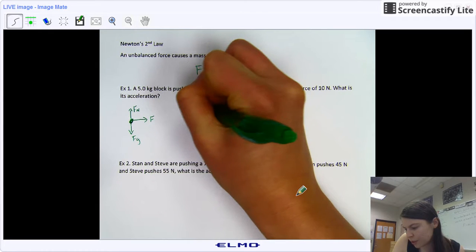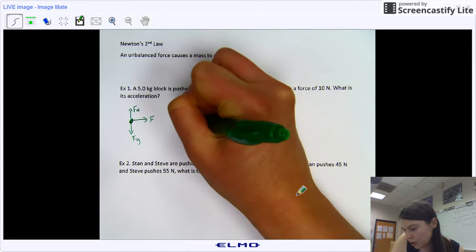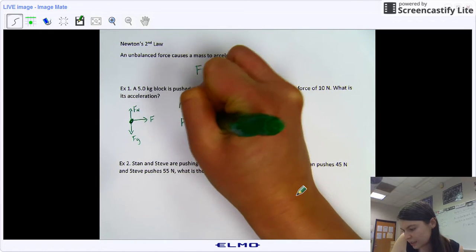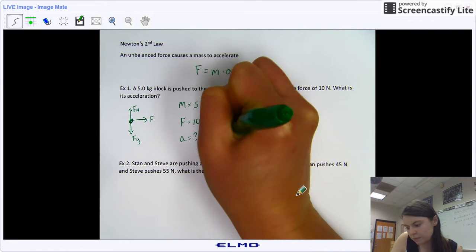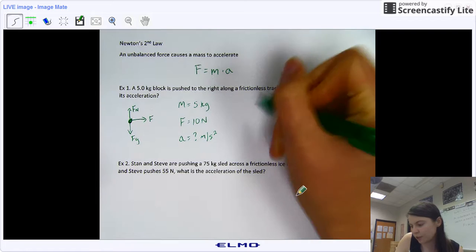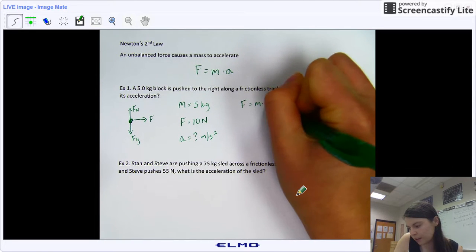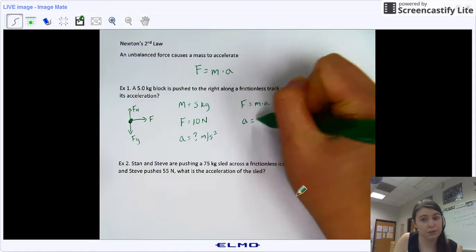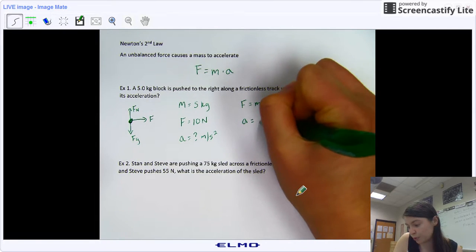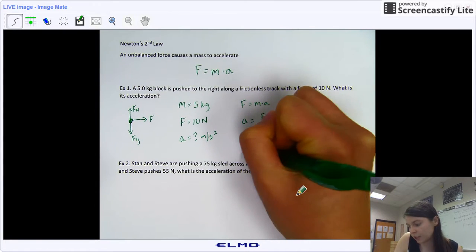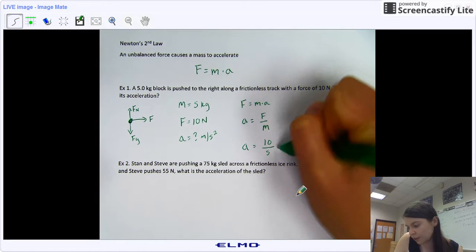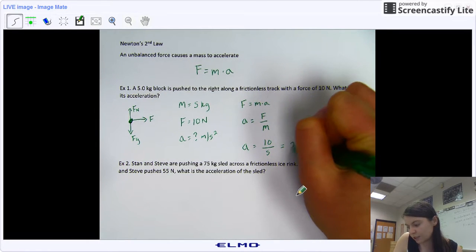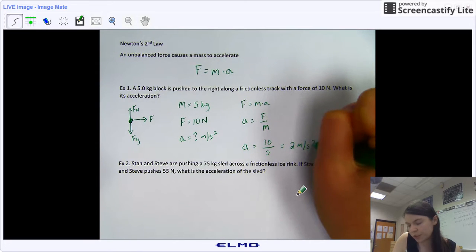So listing our knowns, we know that our mass is five kilograms, our force is 10 newtons, and we want to know what our acceleration is. So we're going to start off with our very simple law, F equals M times A. We're going to rearrange to solve for A, so that becomes force over mass. Plug in our numbers. We're going to have 10 newtons over five kilograms or an acceleration of two meters per second squared.